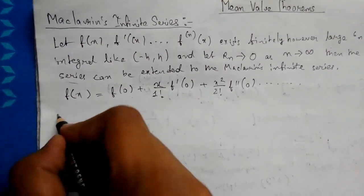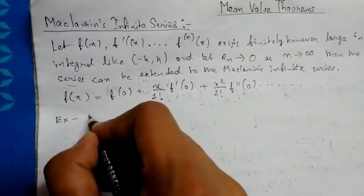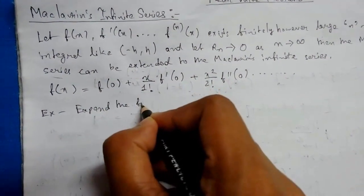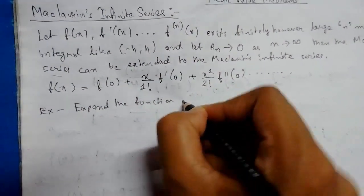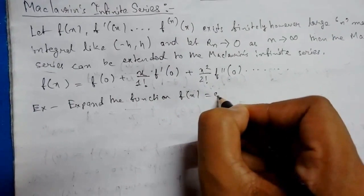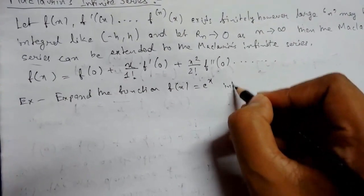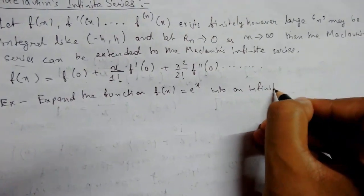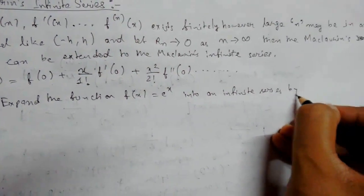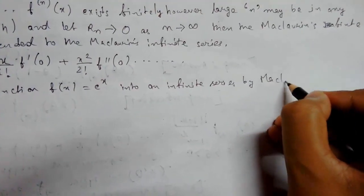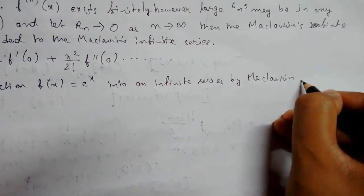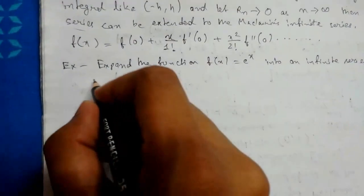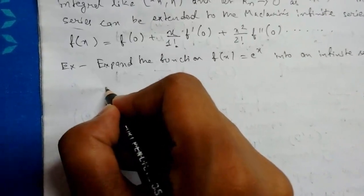let me show you an example. Expand the function f(x) = e^x into an infinite series by Maclaurin's theorem about x = 0. Here it is given that